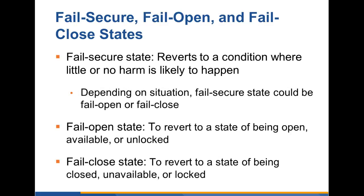Fail secure, fail open, and fail close states. A fail secure state reverts to a condition where little or no harm is likely to happen. Depending upon the situation, a fail secure state could be fail open or fail close. A fail open state reverts to a state of being open, available, or unlocked. In the physical world, fail open doors allow people to leave a building easily in a disaster such as a fire, though they might also allow intruders to access secured areas. In IT, fail open means unfiltered communication or data access. Fail close reverts to a state of being closed, unavailable, or locked — preventing a doorway or container from being open during an emergency, or in IT, blocking access to communications and digital resources.